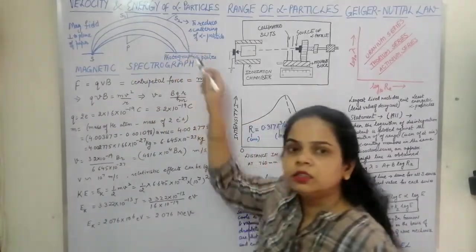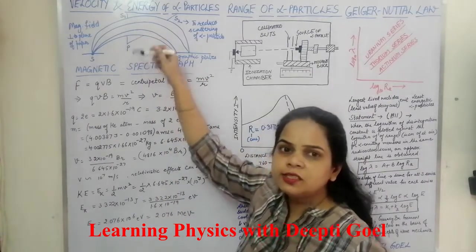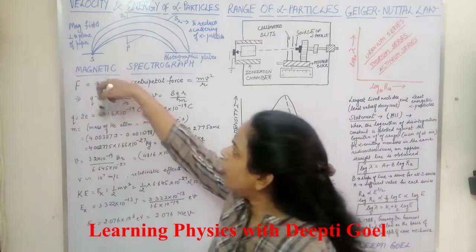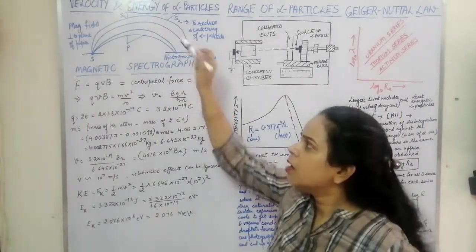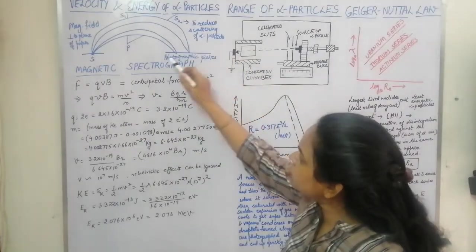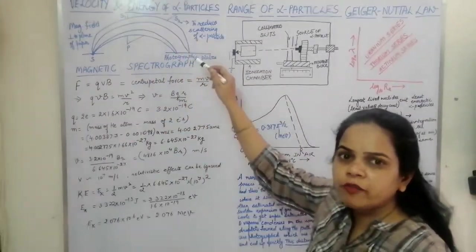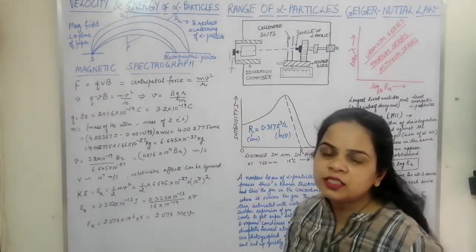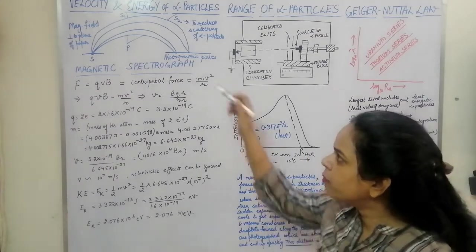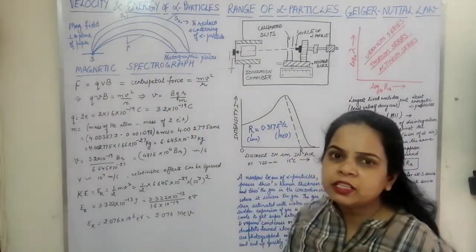The alpha particles move in a circular path, and the slits ensure the path remains circular. When they reach the other end, they strike photographic plates, allowing us to record and measure their velocity. This whole assembly is the magnetic spectrograph.